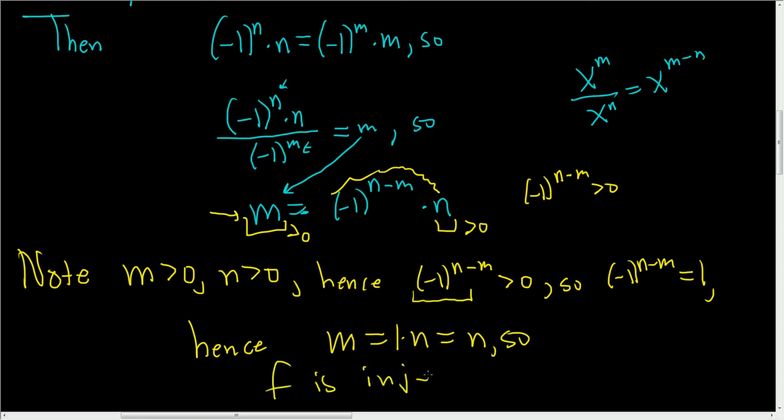Let me go over that again because that's the key step. First, you divide by (-1)^m, then use properties of exponents. Then you realize that this here is positive, greater than zero.